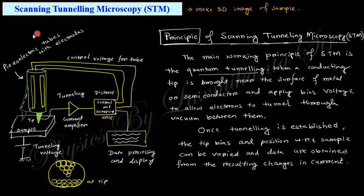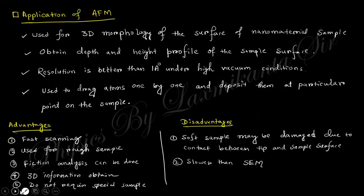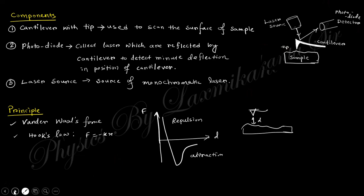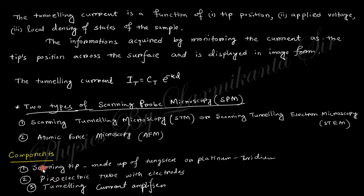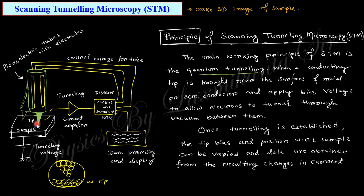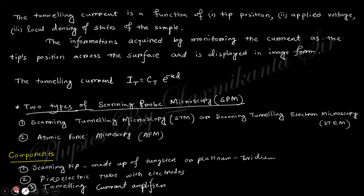Another instrument giving three-dimensional morphology is the scanning tunneling microscope (STM). Here the tip is very close to the surface and there is current flow due to quantum mechanical tunneling — unlike AFM where laser reflection gives the information, here current flows from the material. The components include a piezo tube with electrodes and a tunneling current amplifier. There is a gap and current flows due to quantum mechanical tunneling. The tunneling current is very low, so it must be amplified.